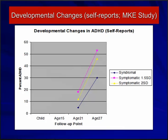Prior to about 27 to 30 years of age, self-reports and others' reports frequently do not correspond with each other, which is why I strongly recommend always obtaining the reports of a collateral — someone who knows the person well — in addition to self-reports.